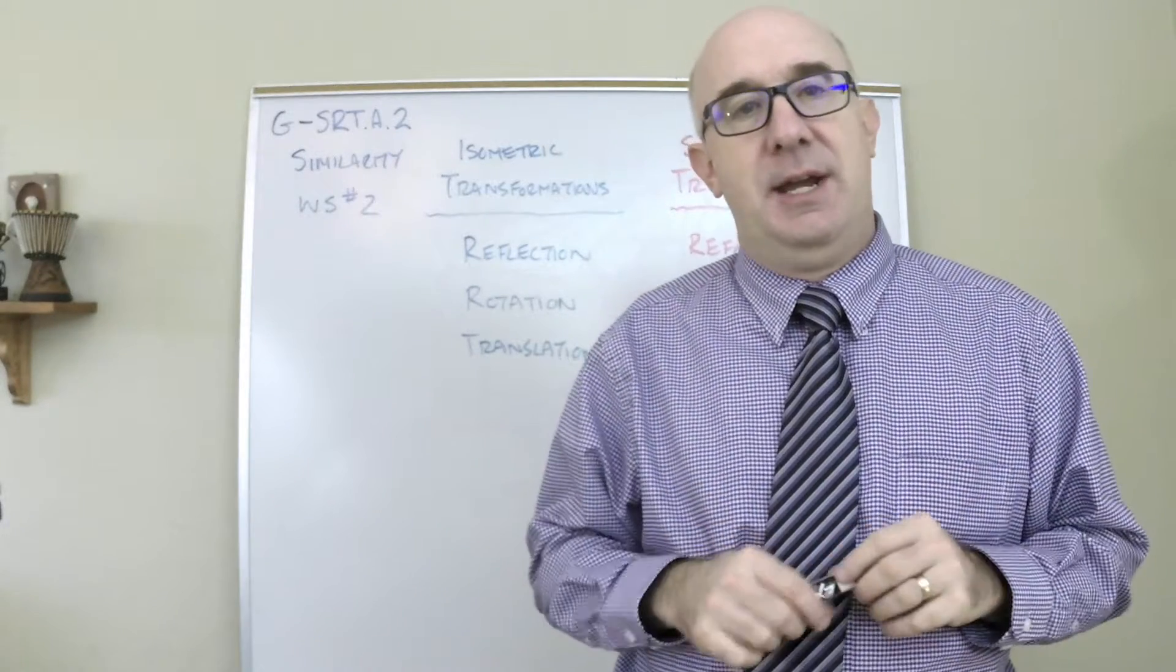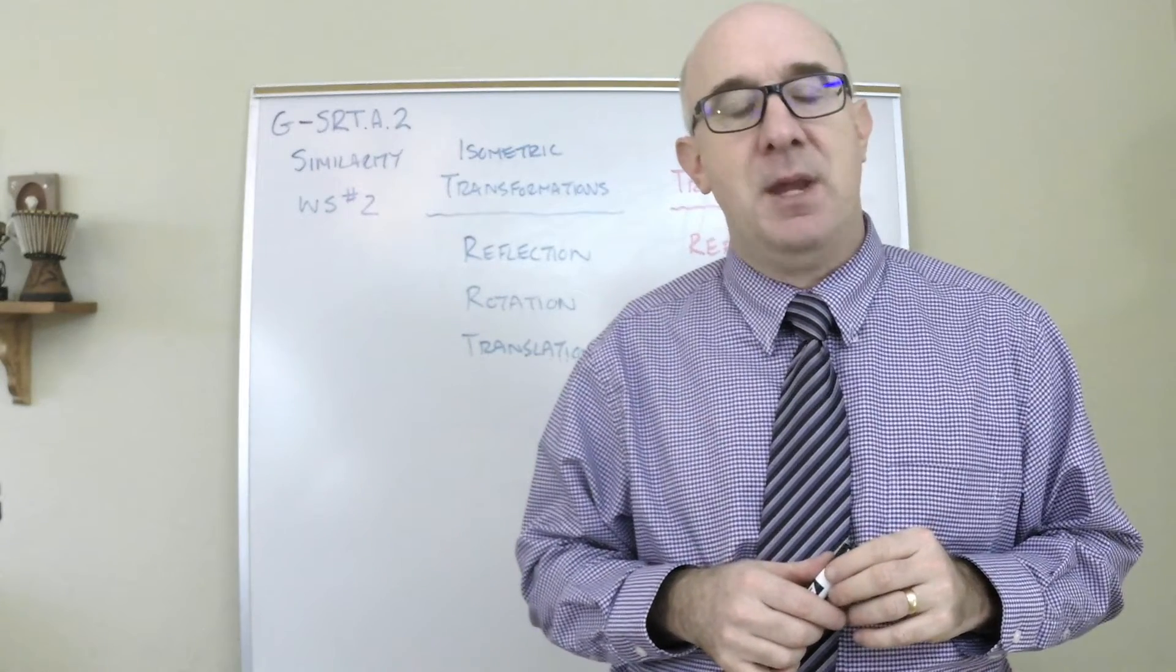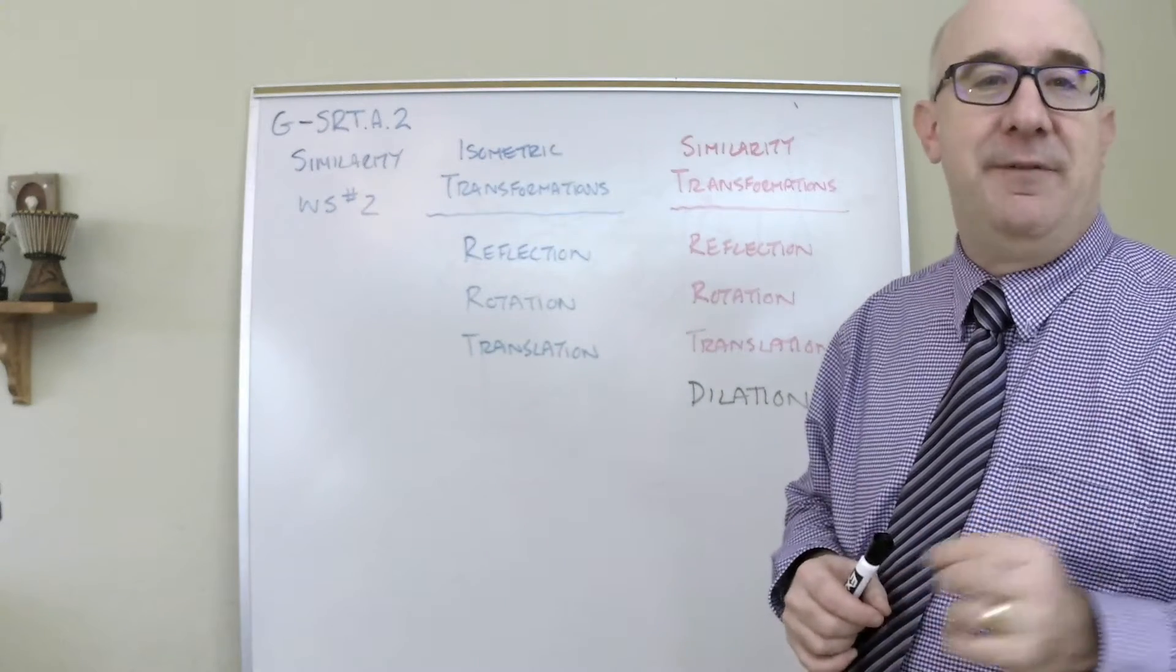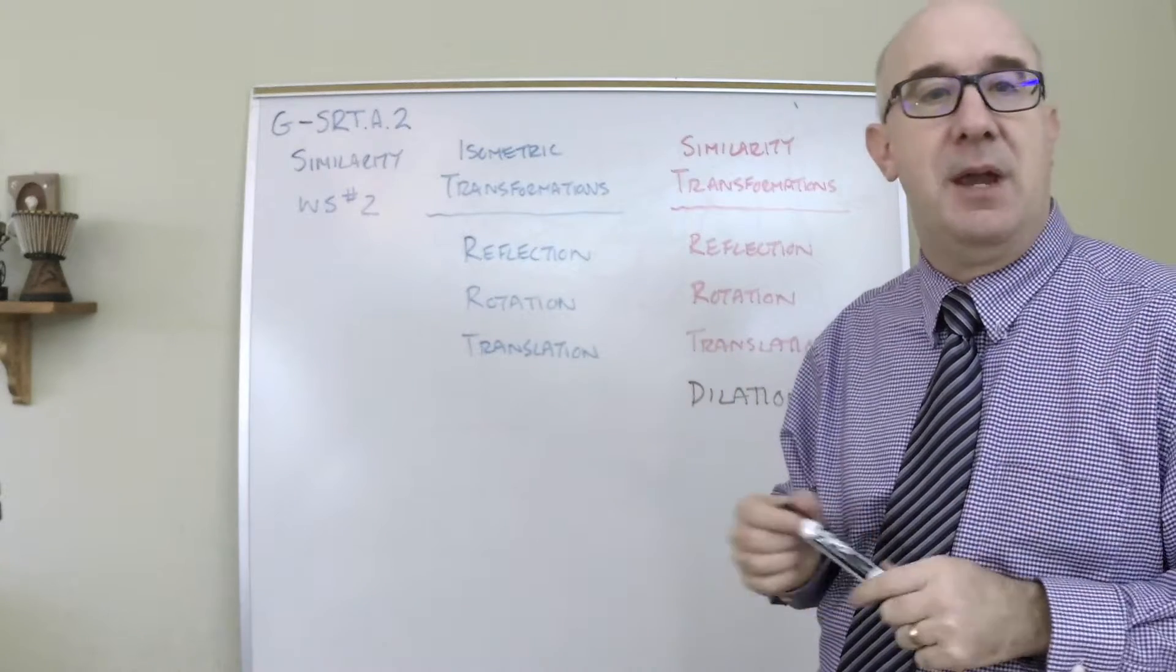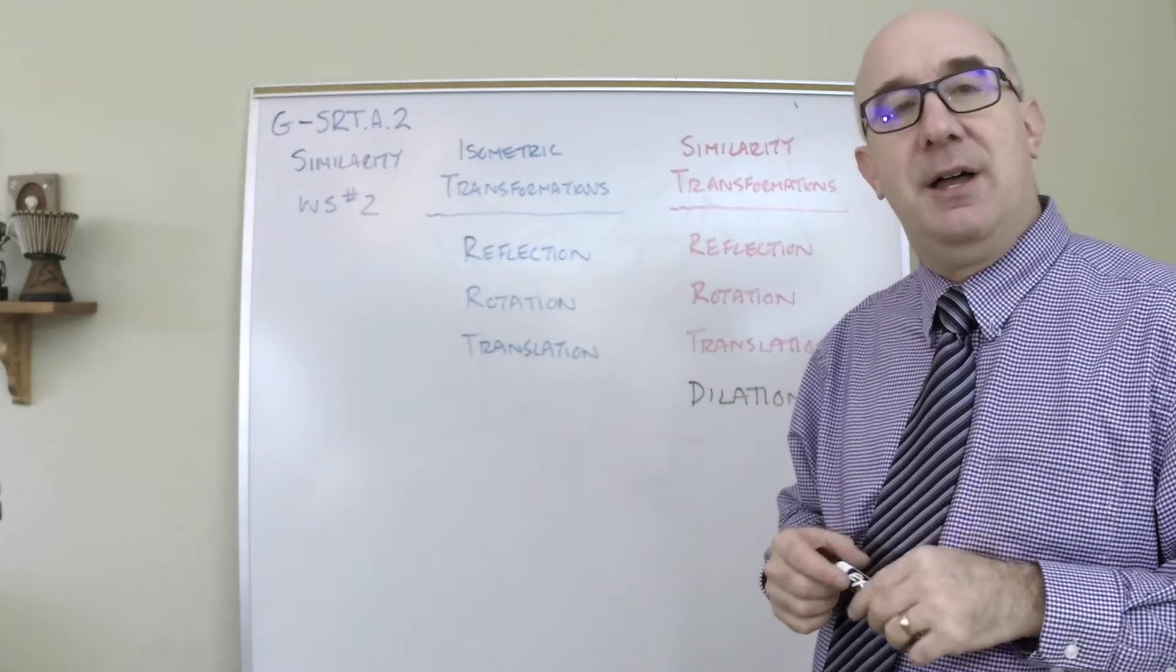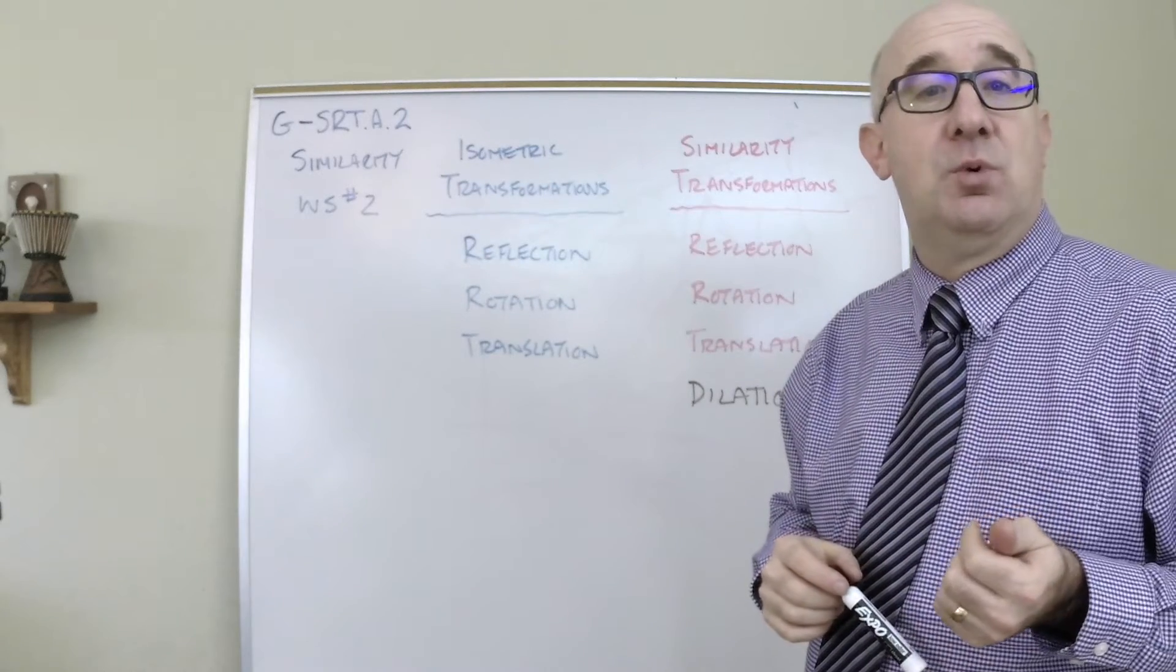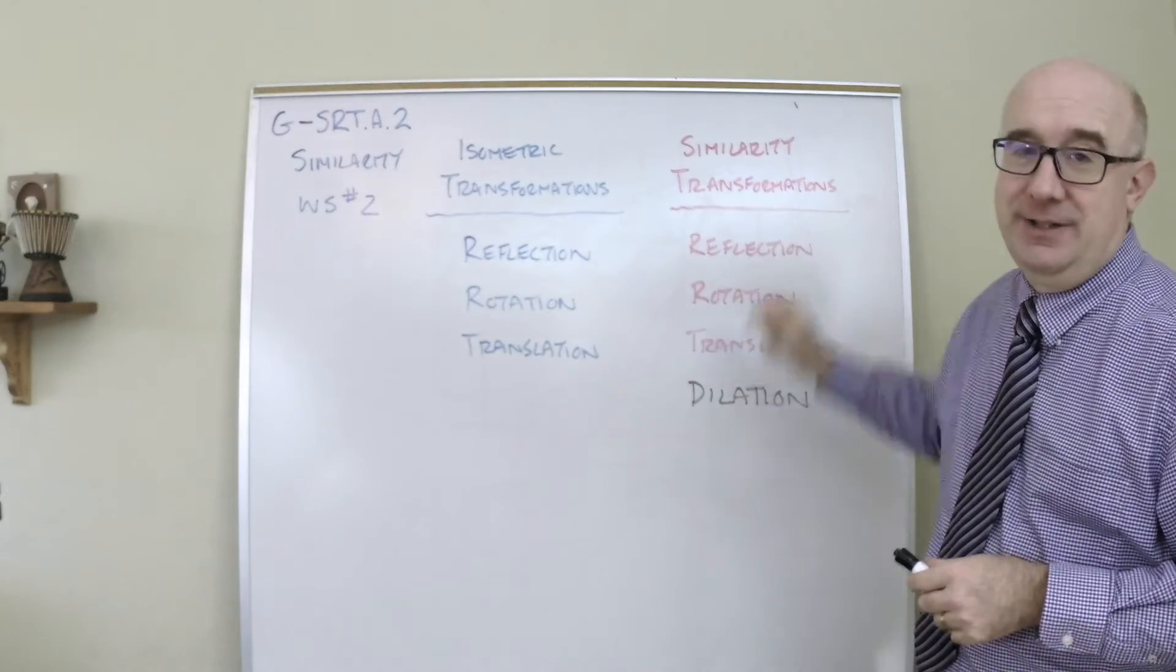all of those skills is for these moments coming up about similarity. Similarity is established under a new criteria, a new definition that says two objects, two shapes, two triangles if it may be, are similar if you can map one onto the other using a single or series of similarity transformations.